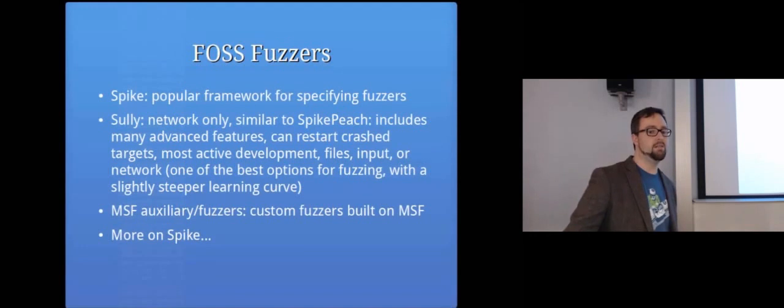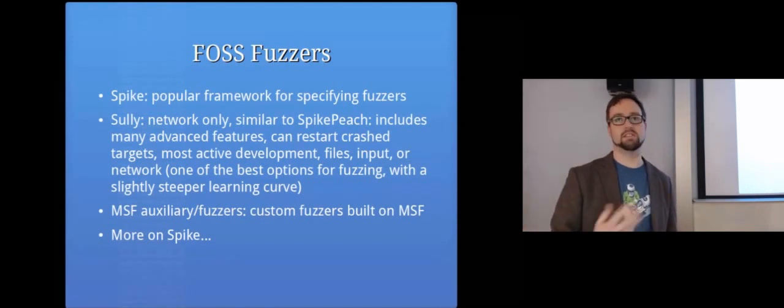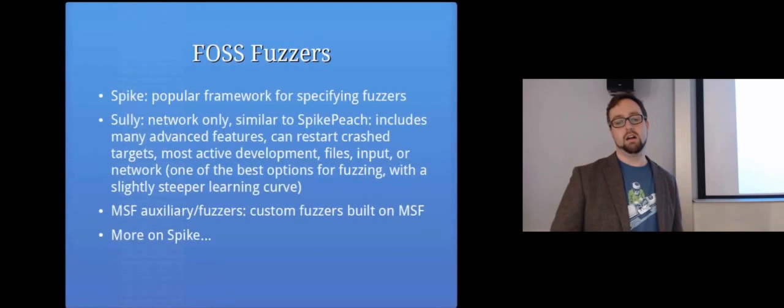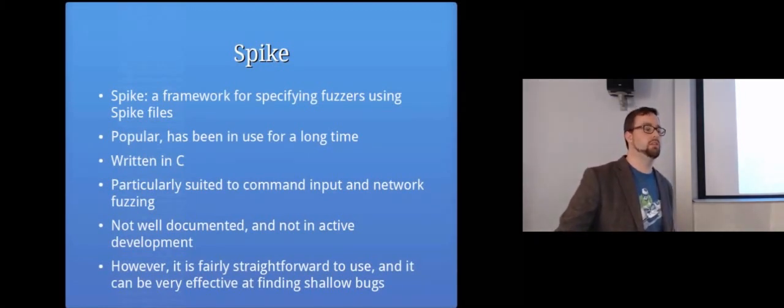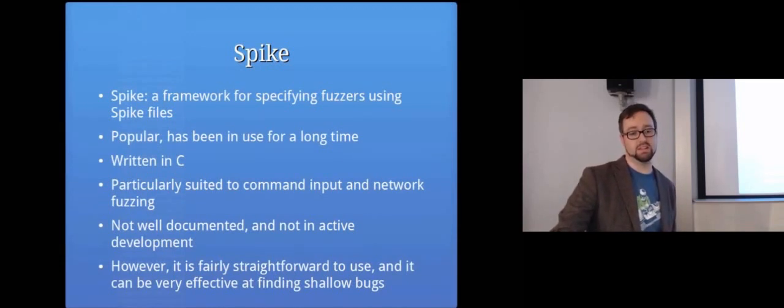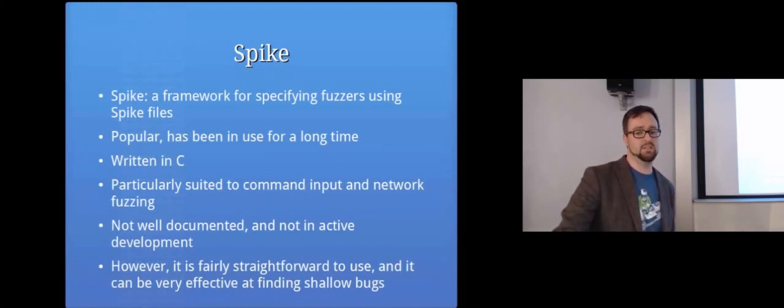So you can also have, like there are Metasploit modules that fuzz particular protocols, and there's loads of different programs that have fuzzers to fuzz specific types of programs. So there are like FTP fuzzers that you can use against an FTP server. And so some of them are written for Metasploit. So Spike is basically, it's like a scripting language, where you specify what information to send and receive from the other side in a Spike file. So it's been around for a really long time. It's written in C. It's particularly well suited for command input and network fuzzing. It's not very well documented though, and it's not really in active development anymore. But it is fairly straightforward to use, and it can be very effective for finding shelly bugs.